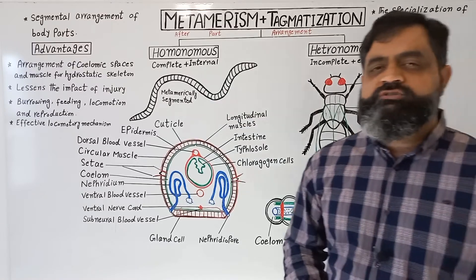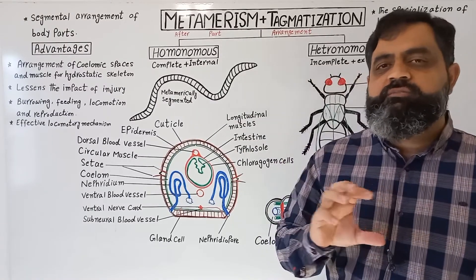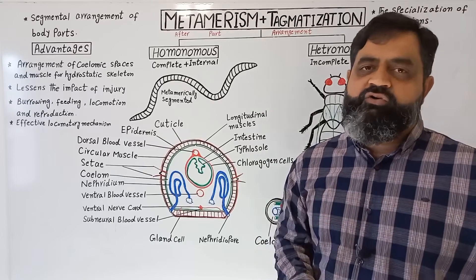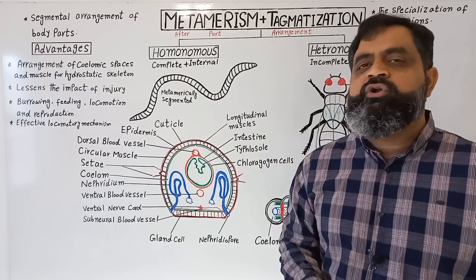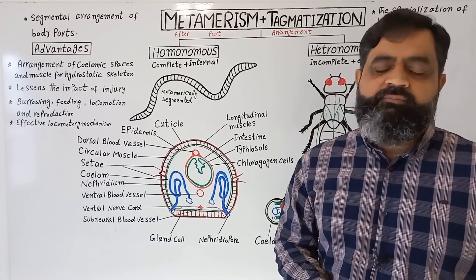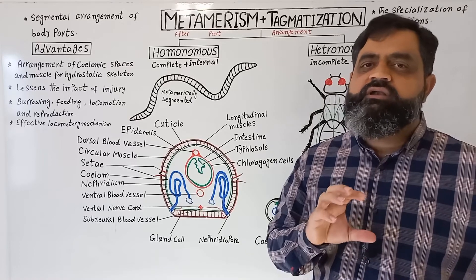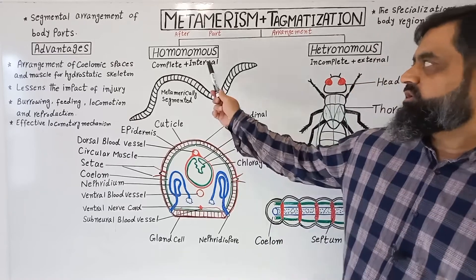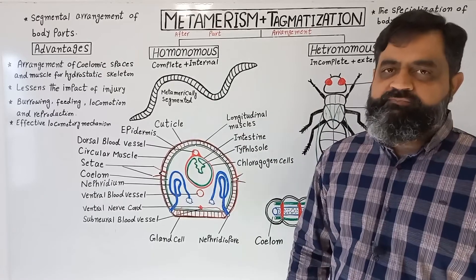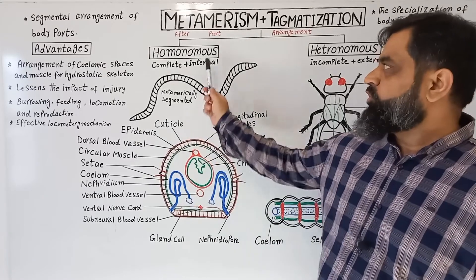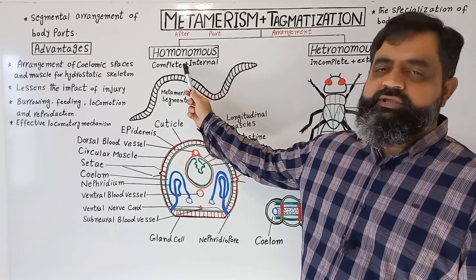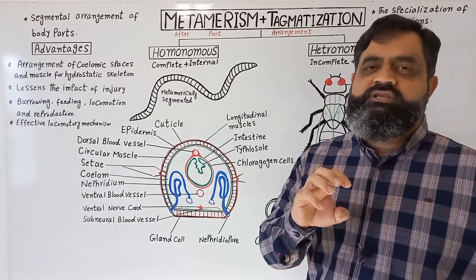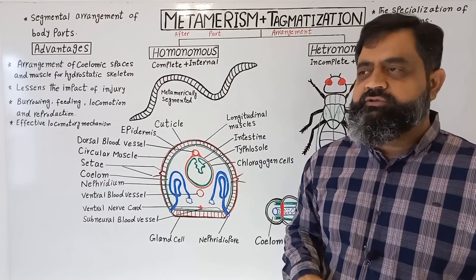In homonomous metamerism, all the segments of the body are identical — they have the same arrangement of body parts. In heteronomous metamerism, the body parts are not identical. In homonomous metamerism, segmentation is usually complete, and the segments of the body can be seen internally as well as externally.